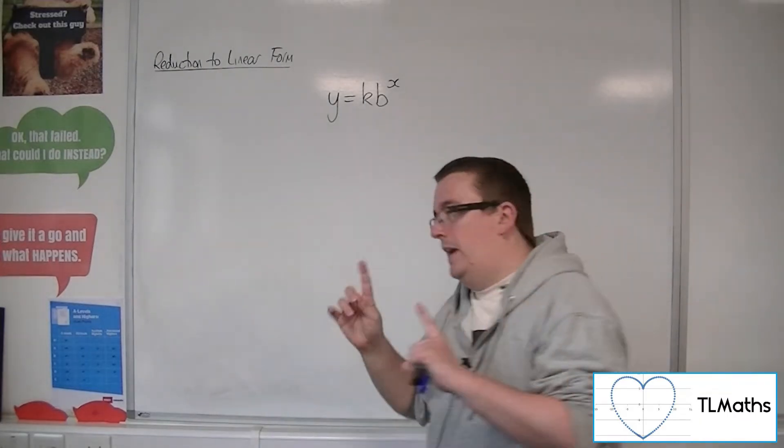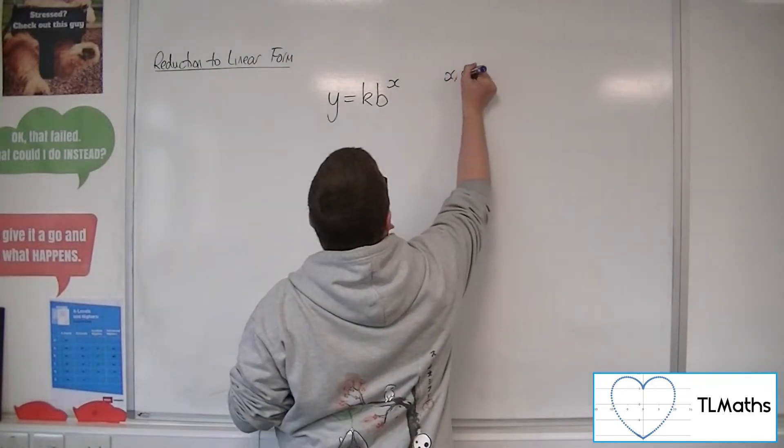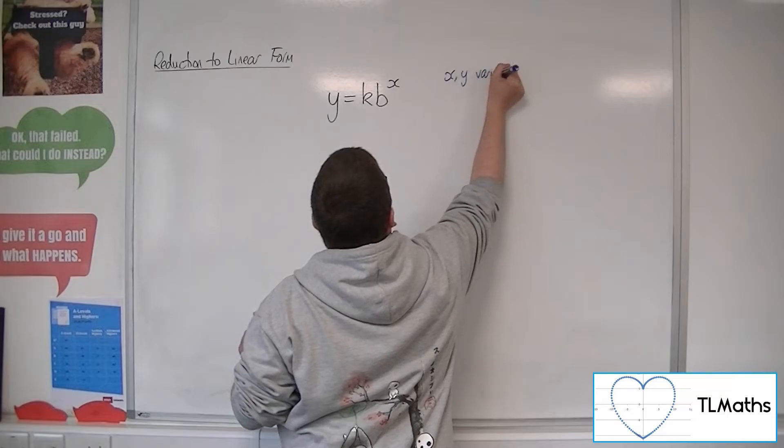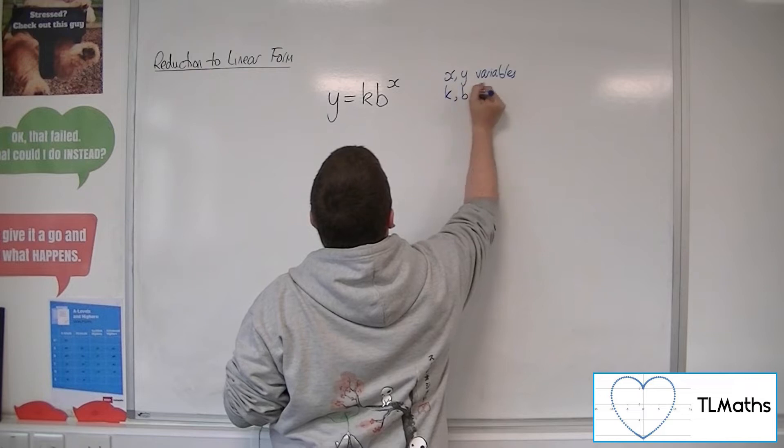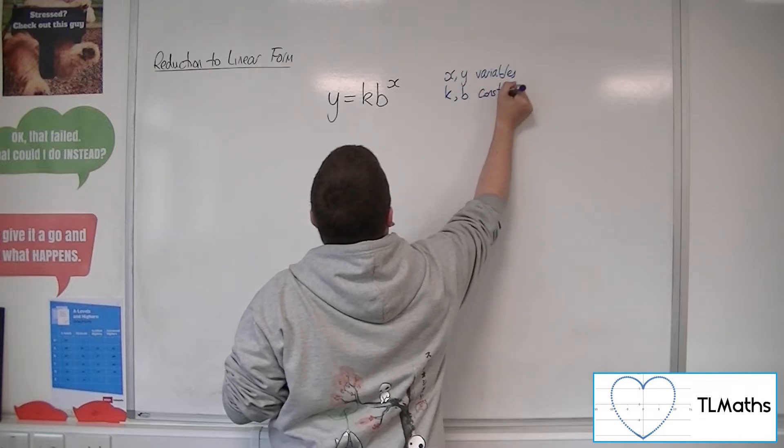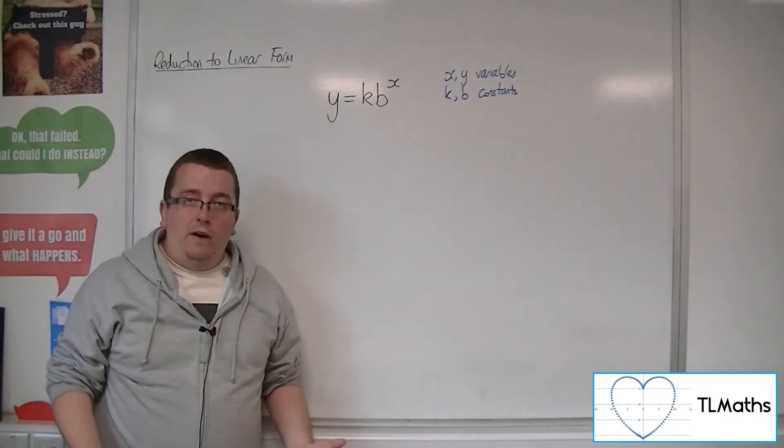Be careful on the fact that, remember, x and y here are the variables. They're the ones that are changing. And the k and the b are constants. So they're just numbers that we're really wanting to find.